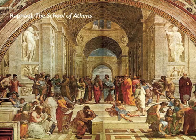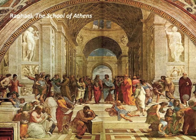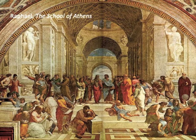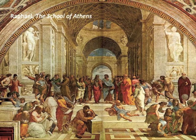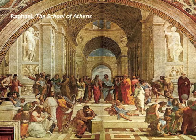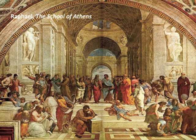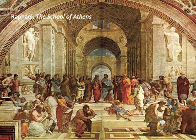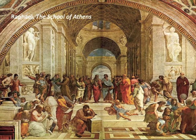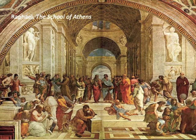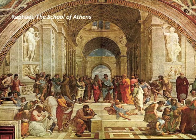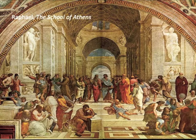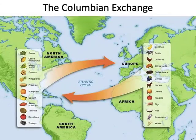In Europe, the Renaissance — the rediscovery of the classical civilizations of Greece and Rome — and the application of reason to questions of physical science and philosophy created scientific and artistic revolutions and new ways of organizing society, many of which remain with us today. One of the most fundamental and revolutionary consequences of the voyages of discovery was a cultural interaction called the Columbian Exchange.